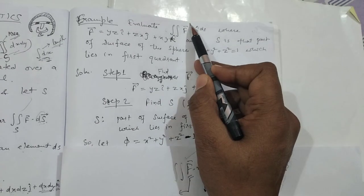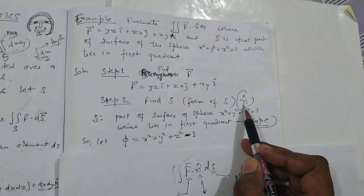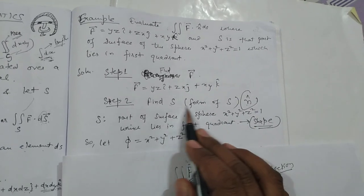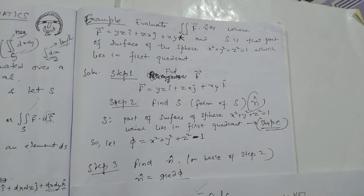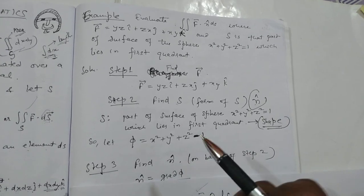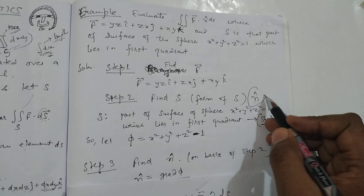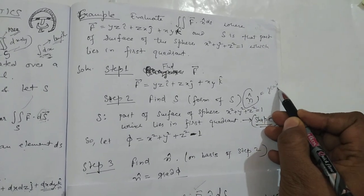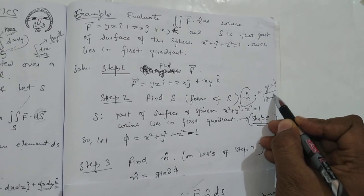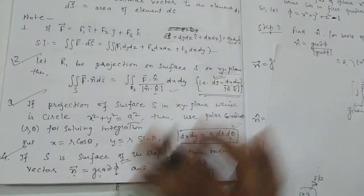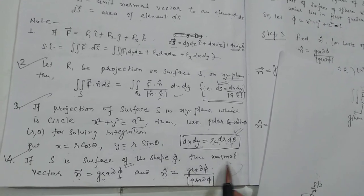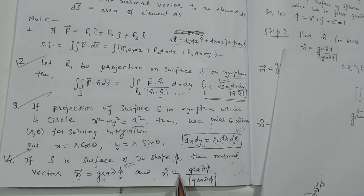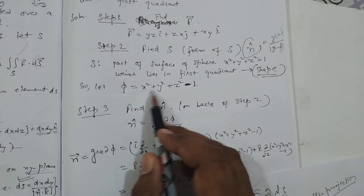Step 3: Find n̂. To find n̂, we look at the form of S. We have a scalar function φ = x² + y² + z². As I explained in the last video, if S is a surface of the form φ = constant, then the unit normal n̂ = ∇φ / |∇φ|. So we define φ = x² + y² + z² − 1.